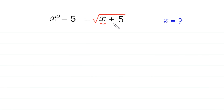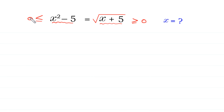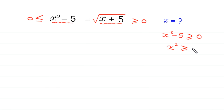Since the expression x plus 5 is under the radical sign, for real solutions this must be greater than or equal to 0. And because the right side must be non-negative, x squared minus 5 must also be greater than or equal to 0. Moving the negative 5 to the right side, x squared must be greater than or equal to 5. This is the condition we will use to check the solutions of this equation.